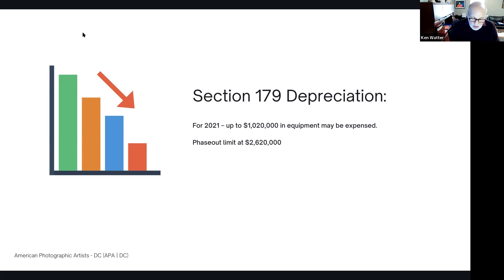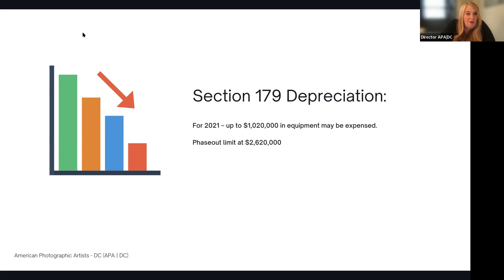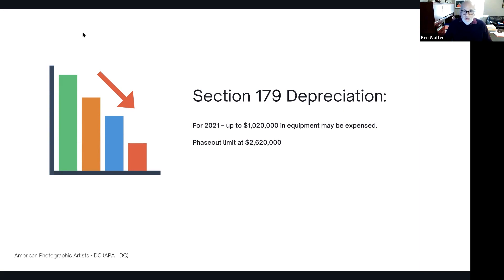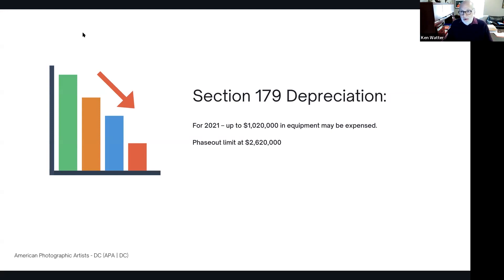Richard had a question: if he purchased a new vehicle with a GVW over 6,000 pounds back in November and used it 100% for business, can he deduct the full purchase cost? If it's over 6,000 pounds and 100% for business, you can deduct the full purchase cost. However, you have to be careful in the next four years — since it's a five-year asset — if business use decreases below 100%, there will be a recapture of some of the depreciation you took. So if you have 100% now and it drops to 50%, you can take the deduction now but you'll have a give-back next year.